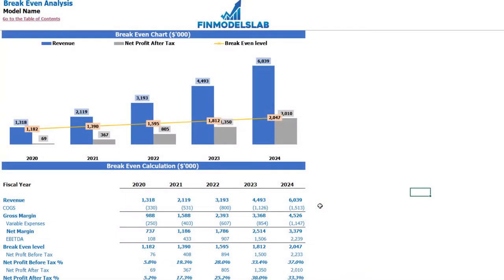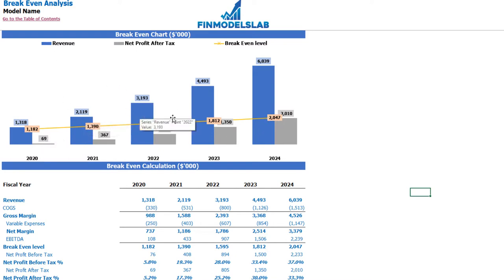On the breakeven tab you may find the calculation of the revenue breakeven level and a breakeven chart. For this particular use case, you may find that your revenue breakeven level is less than the actual revenue calculation, which means that the company is profitable.